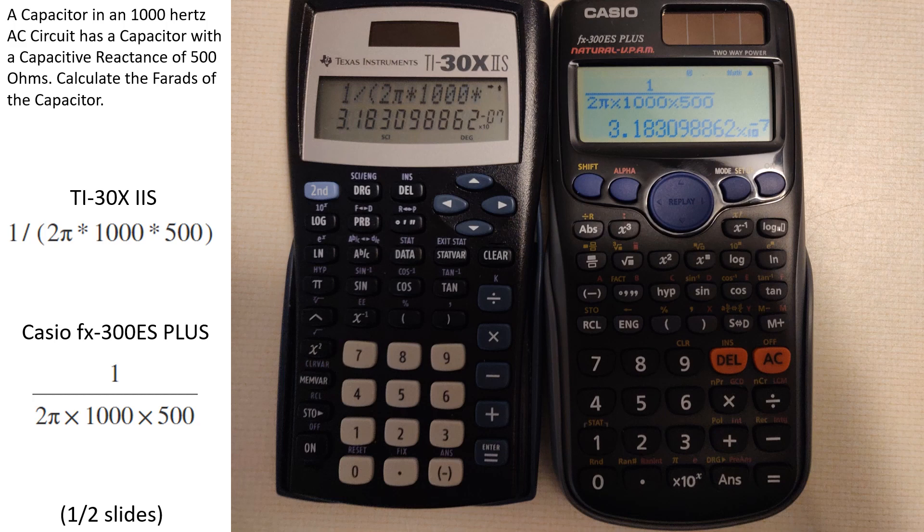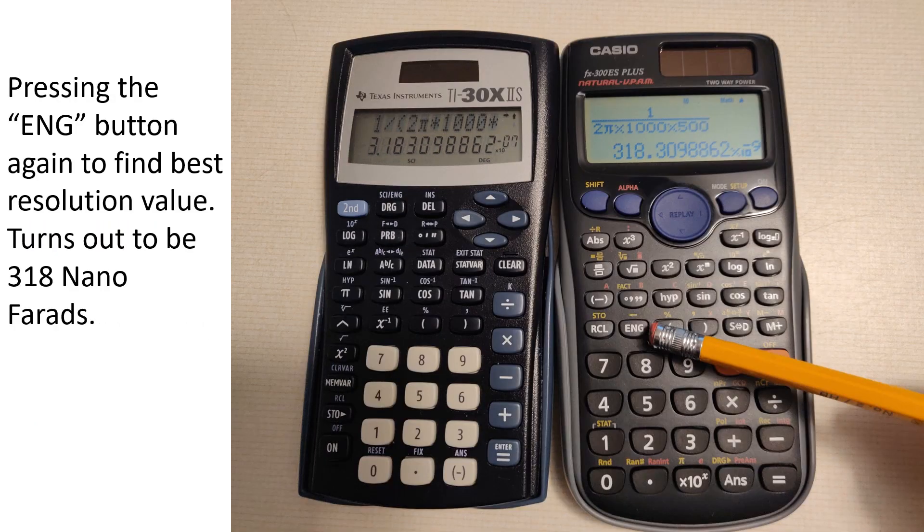This engineering notation functionality is especially handy towards the end of AC theory, wherein we start working with very small values in capacitors and inductors. In this formula, we are trying to deduce the value of a capacitor in farads based on its capacitive reactance. Once again, by pressing the ENG button, the result of the equation is given in engineering notation. This is likely the way that a quiz or test would desire the answer.